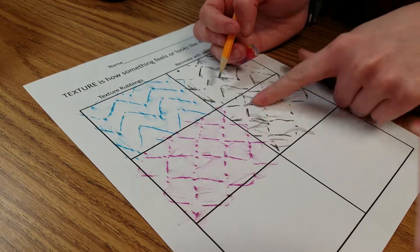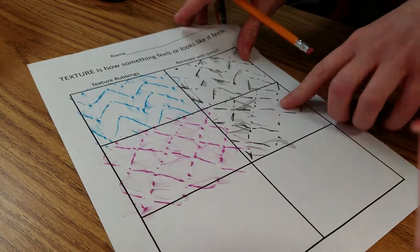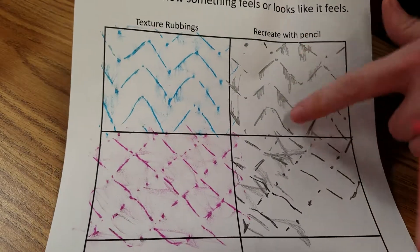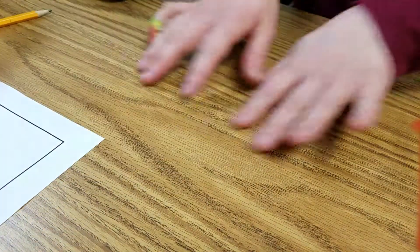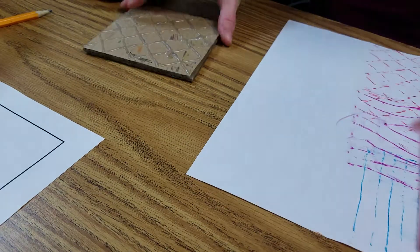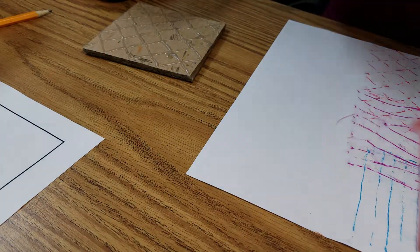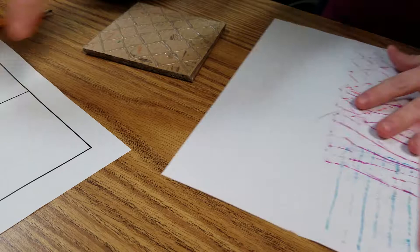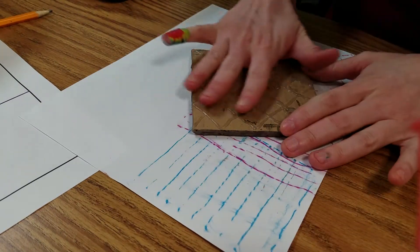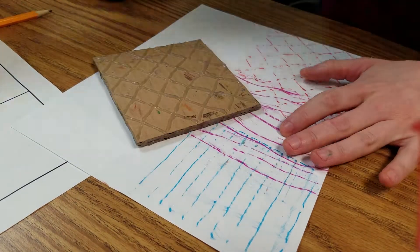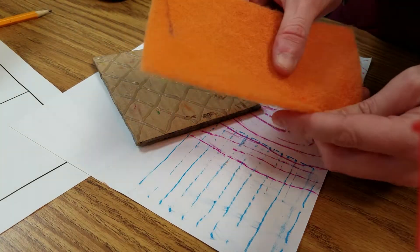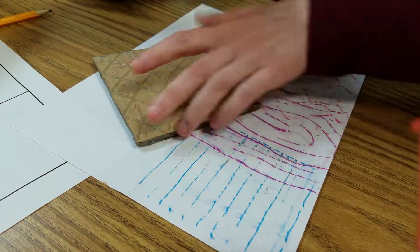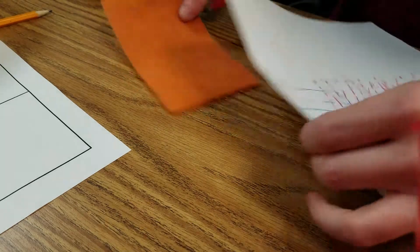All right, so that is texture, how to do texture rubbings and recreations. And texture is how something feels or look like it would feel if you could rub your hand across it or touch it. And this sort of texture is going to be really smooth when you do a rubbing of it. So don't say, 'Oh, this doesn't make a texture, Miss Williams, there's no texture.' Yes there is, it's just very smooth.